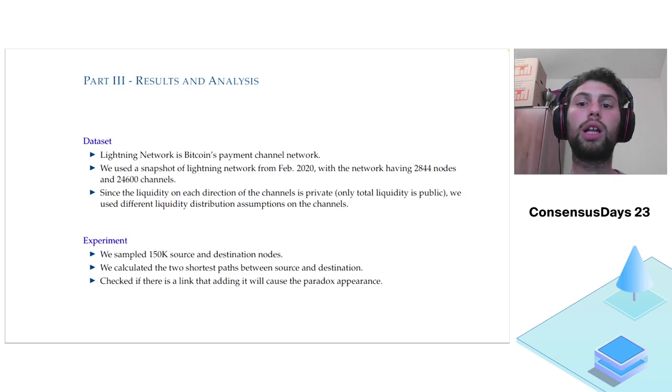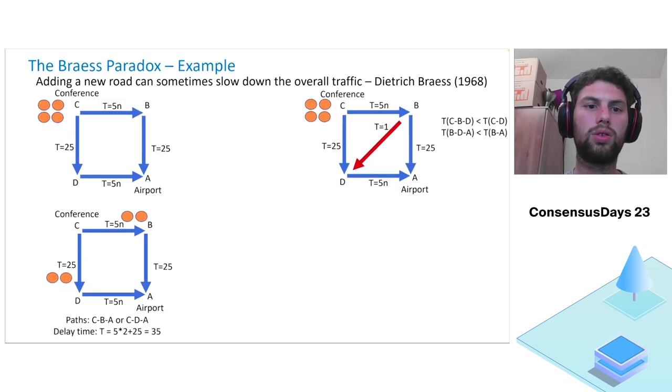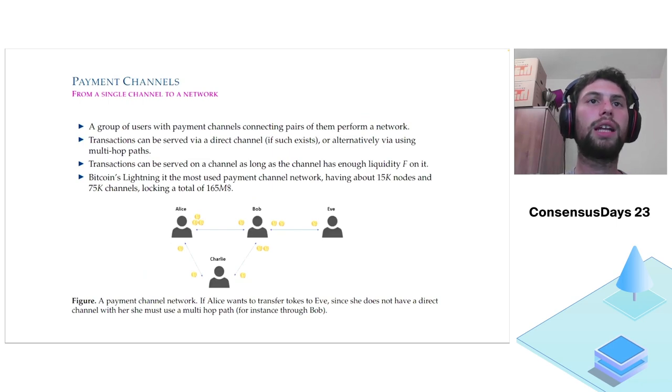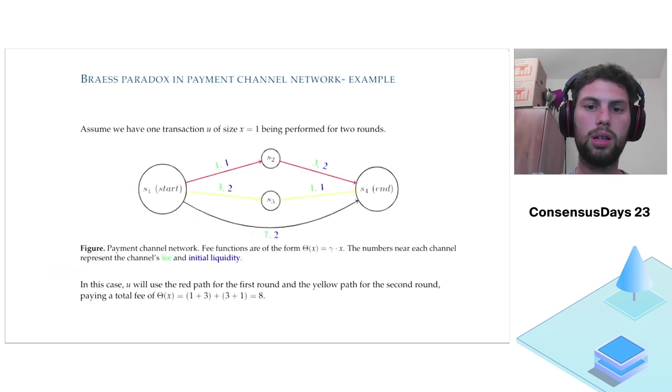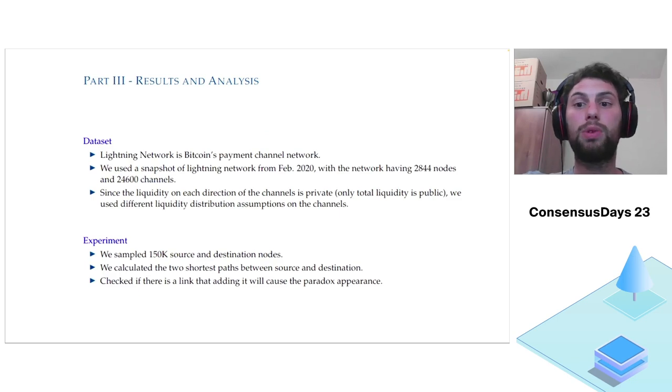We know that while the total liquidity of a channel is known, meaning we know how much funds are locked in total between the two sides, we do not know the exact balance of how much funds are locked on each side. If we look at the channel between Alice and Bob we saw earlier, we do not know the exact amount of how much Alice has and how much Bob has on the channels. We know in total Alice and Bob locked an amount of four tokens, but we do not know what is the exact balance. Since we do not know the exact balance on the channel, since it's private, we use different balance assumptions in our analysis.